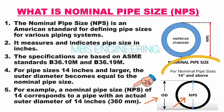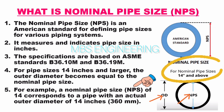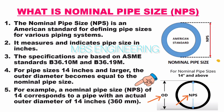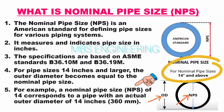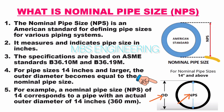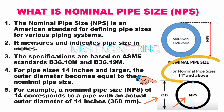For example, a nominal pipe size of 14 corresponds to a pipe with an actual outer diameter of 14 inches or 360 millimeters. Please refer to the picture showing pipe sizes of 14 inches and larger, where the outer diameter becomes equal to the nominal pipe size, NPS.